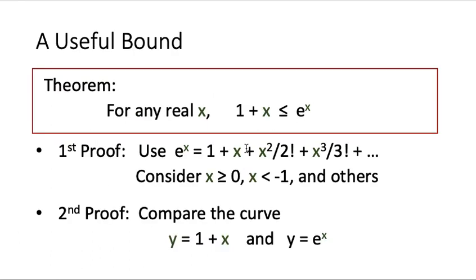For the bound — 1 plus x is less than or equal to e to the power of x — there are two different ways to see why this is correct. The first makes use of the Taylor's expansion or the definition of e to the power of x, which equals 1 plus x plus x squared over 2 factorial plus x cubed over 3 factorial and so on. We consider different cases of x: x greater than or equal to 0, x less than minus 1, and the remaining range, and show that the bound holds in all cases.